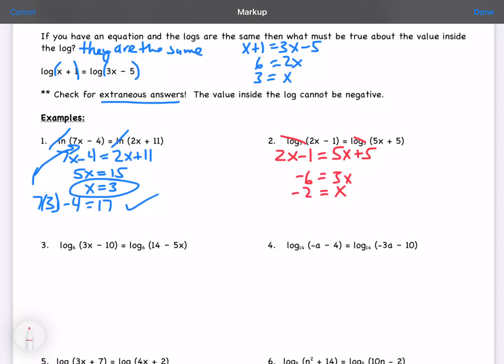Now, when I plug in negative 2 into one of my logs, I get 2 times negative 2 minus 1, which is negative 5. So I have no solution because it's negative.